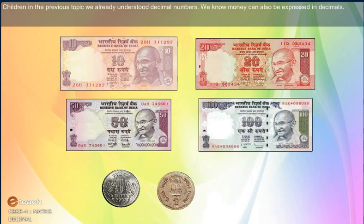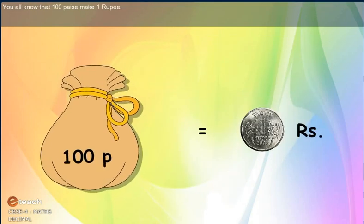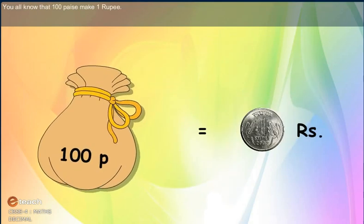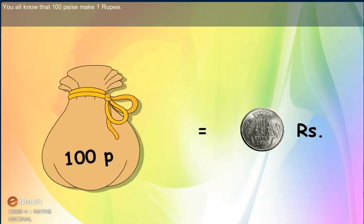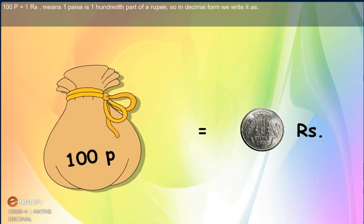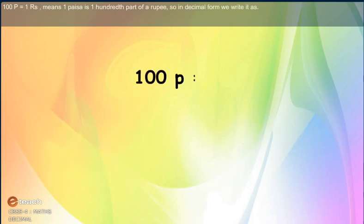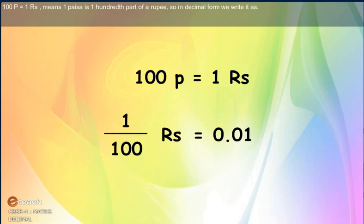We know money can also be expressed in decimals. You all know that 100 paise makes 1 rupee. 100 paise equals 1 rupee, which means 1 paise is the 100th part of a rupee.